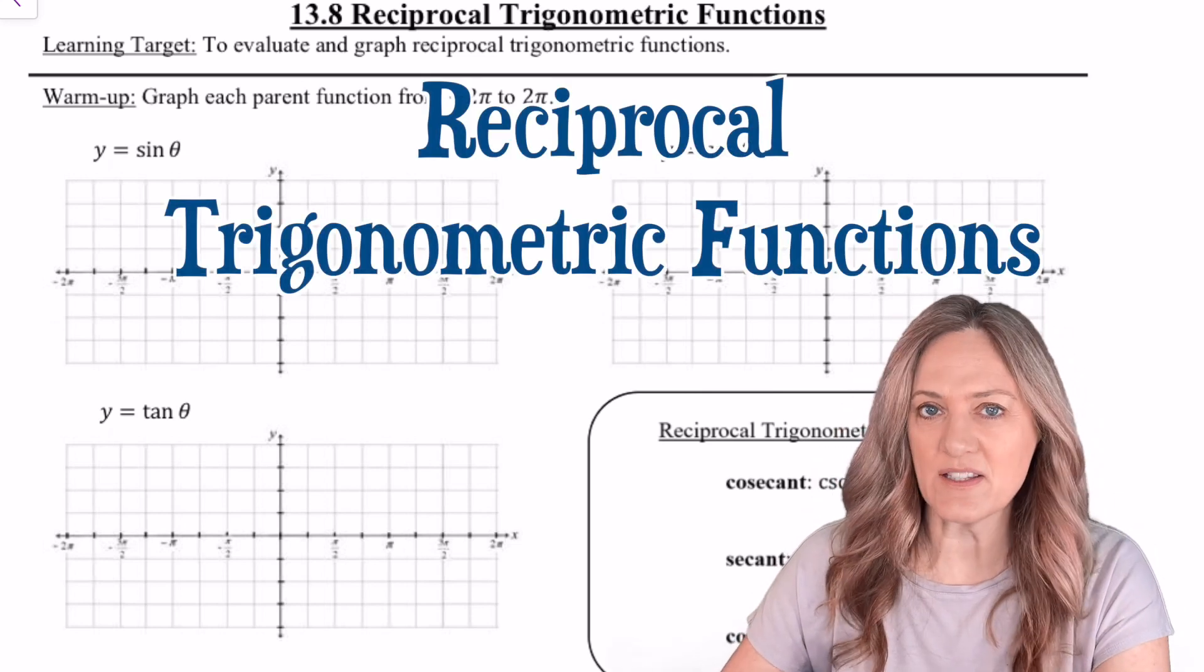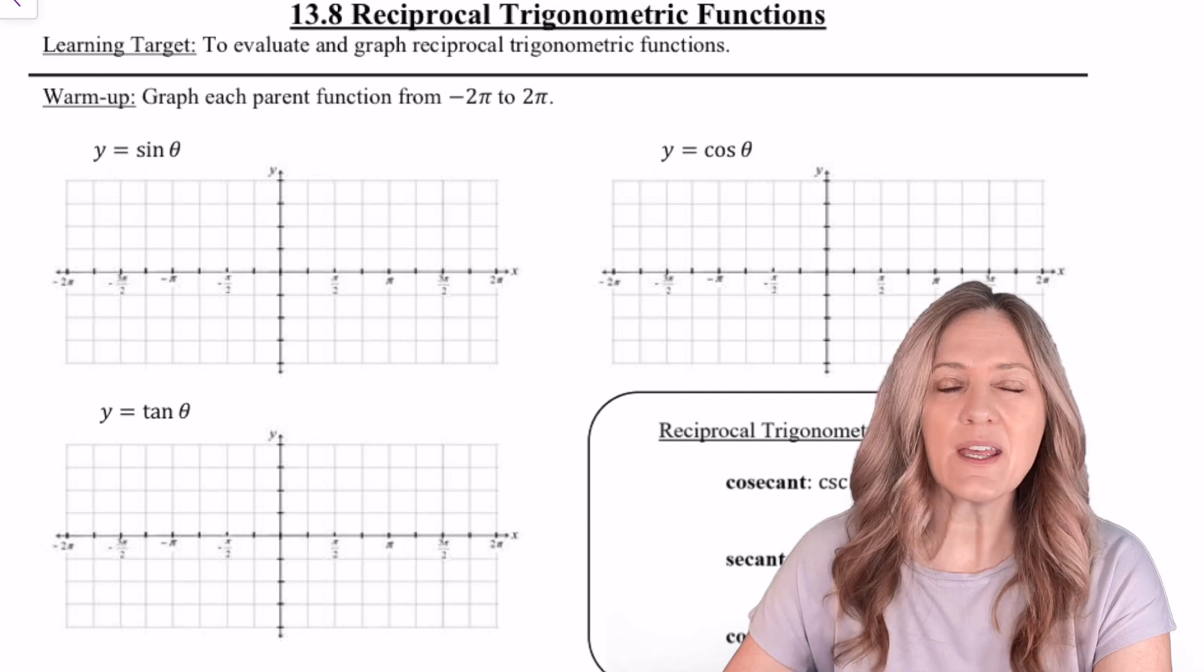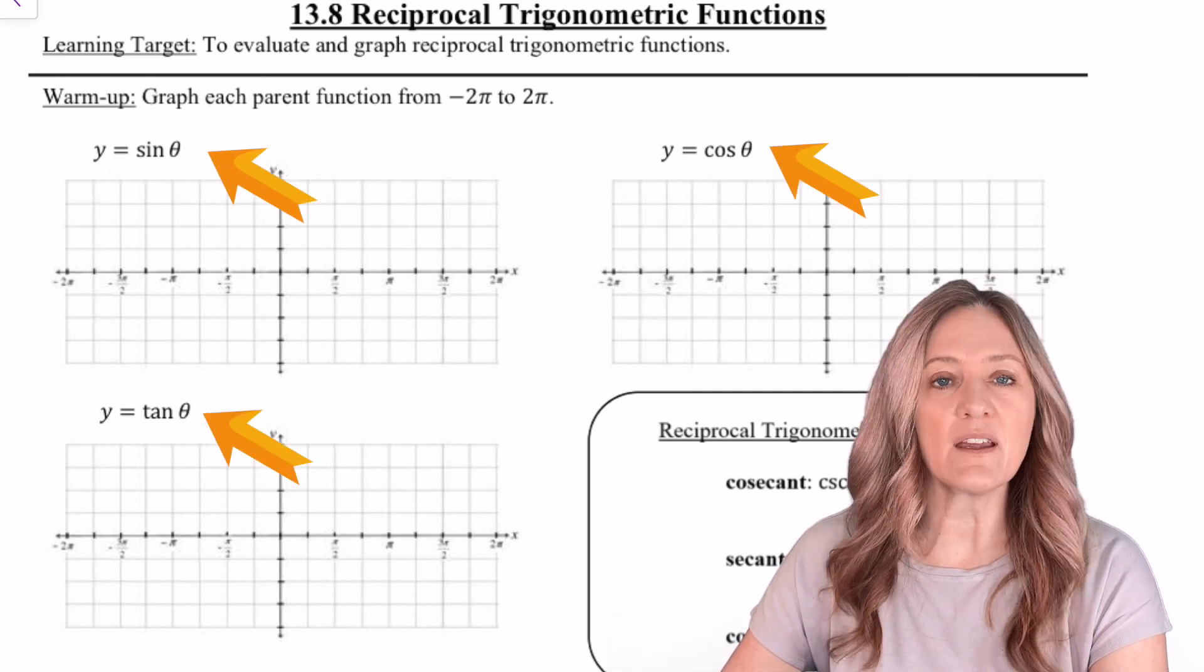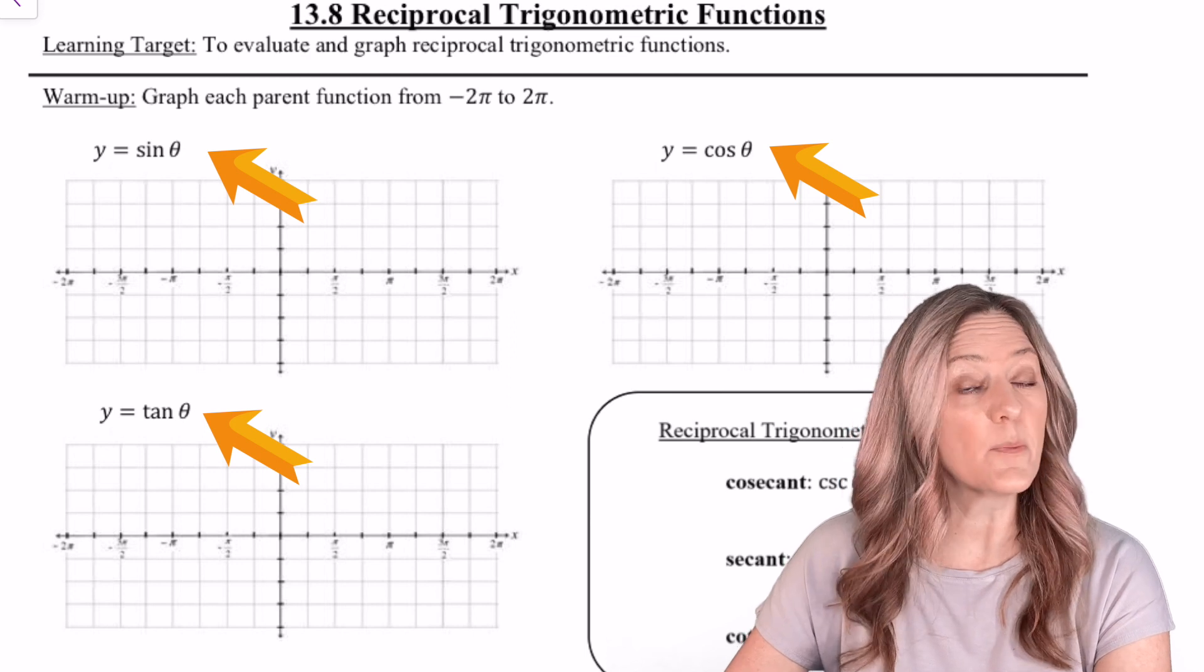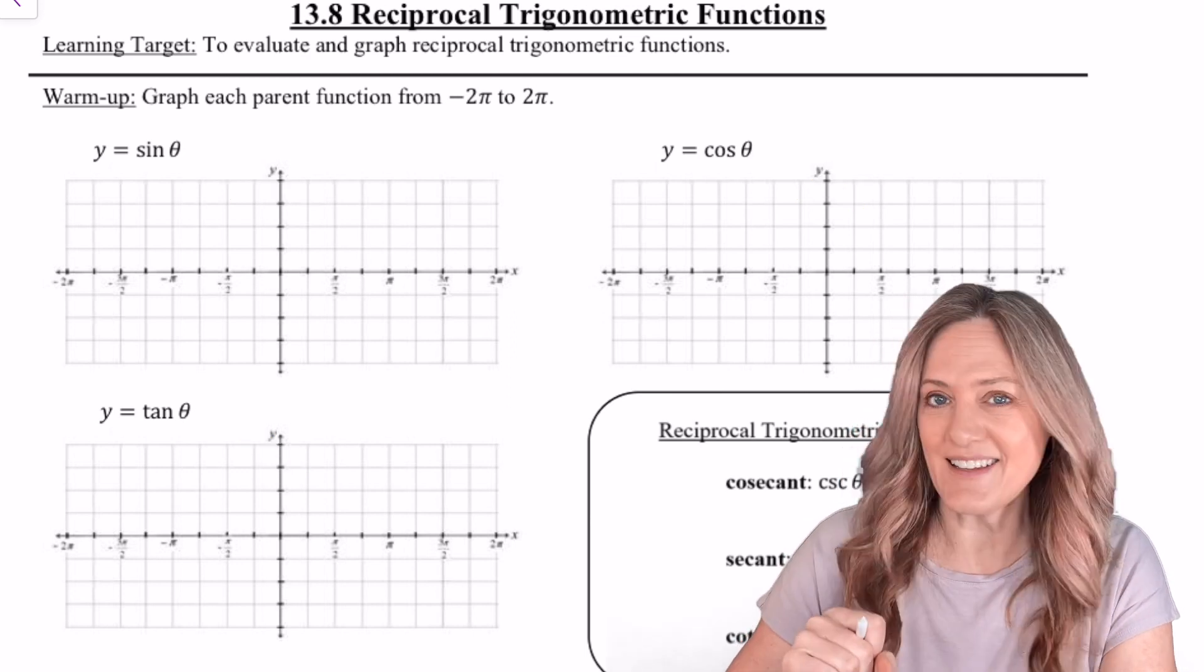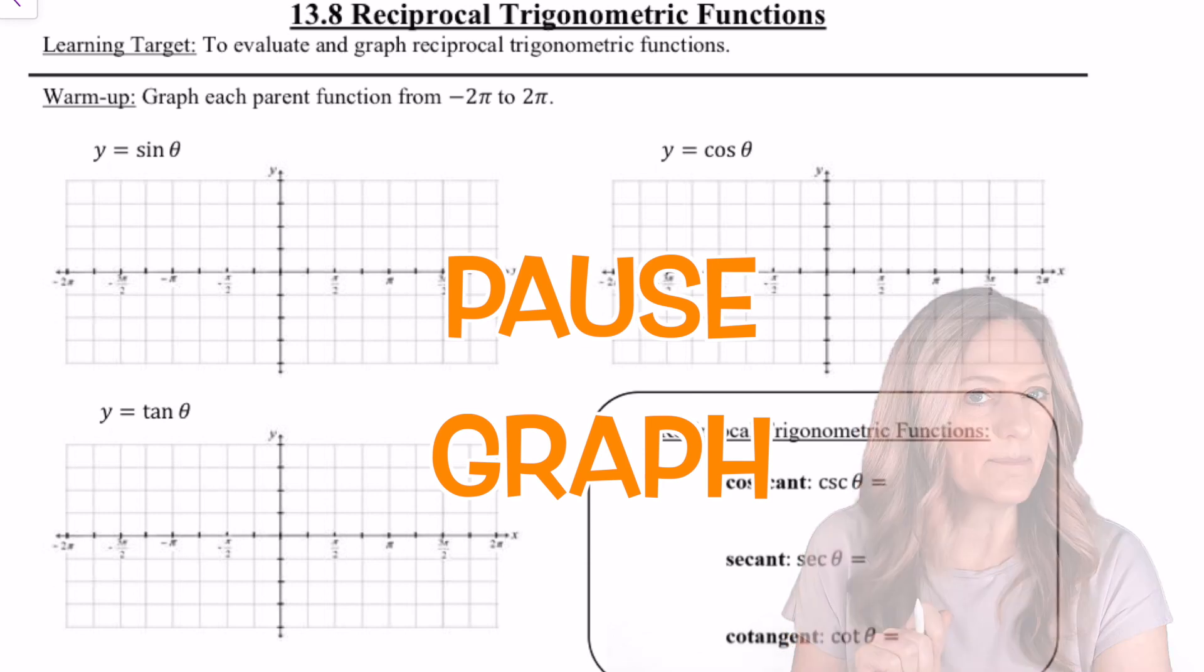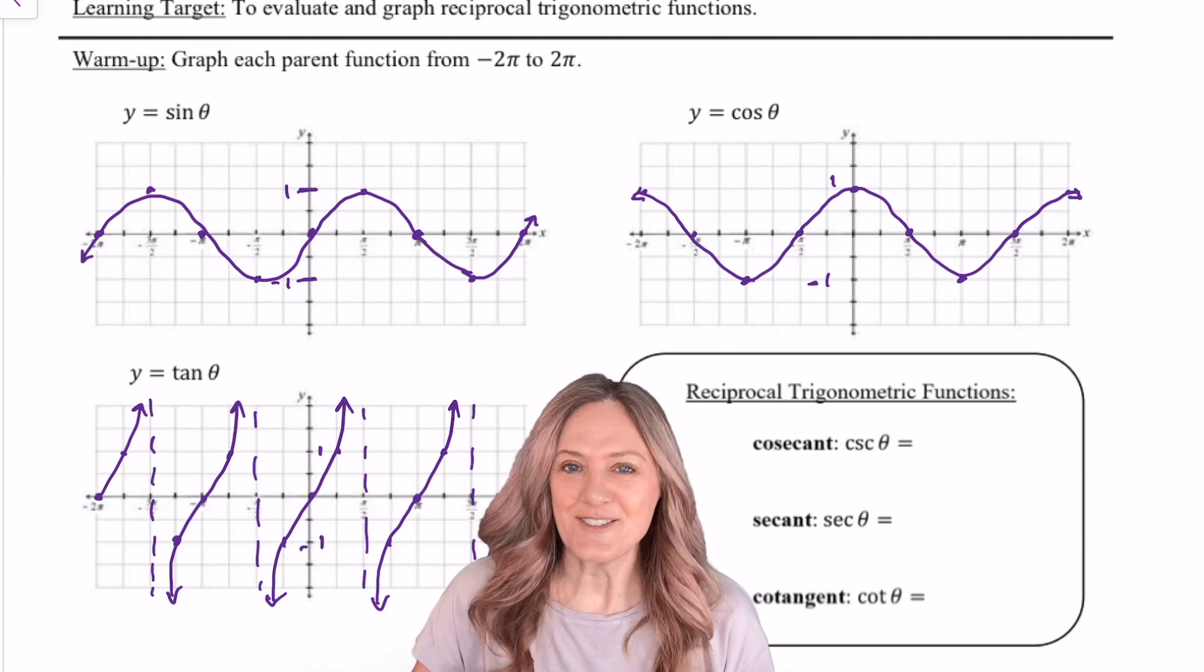Let's talk about the reciprocal trigonometric functions. In order to graph them, it helps us to review sine, cosine, and tangent. So take a moment and graph each of those from negative 2π to 2π. I'm going to label the vertical axis by halves, so every two boxes will be one. Okay, check your graphs.